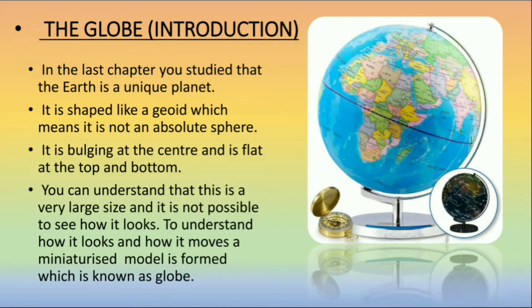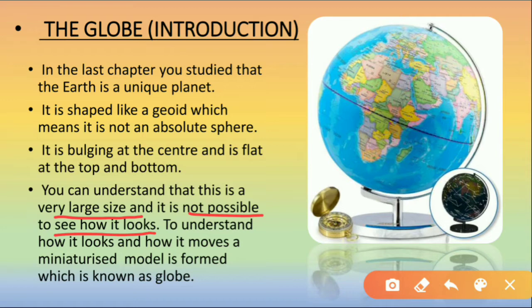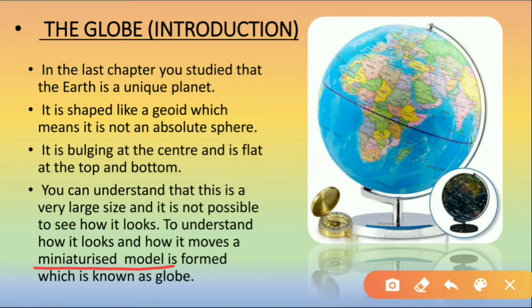Now see the last point. The earth is a very large size and it is not possible to see how it looks. We have never seen the earth in real because it is very large in size. To understand how it looks and how it moves, a miniaturized model is formed, which is known as the globe.